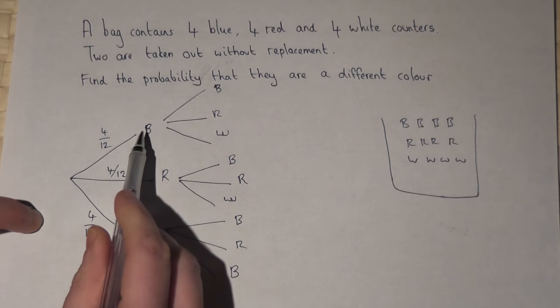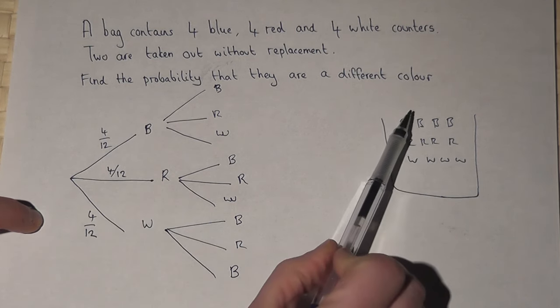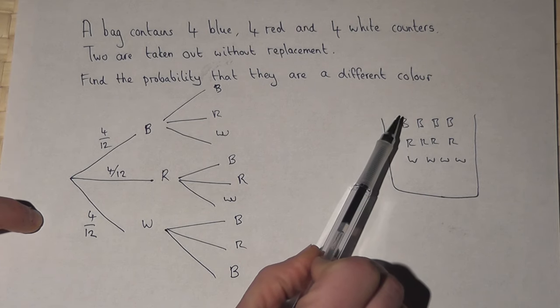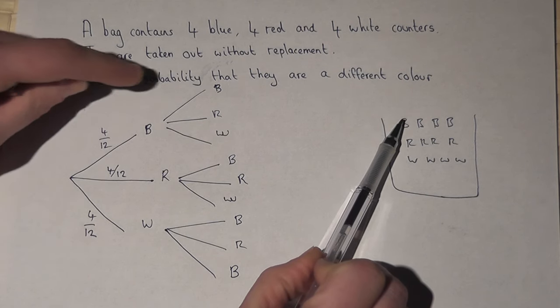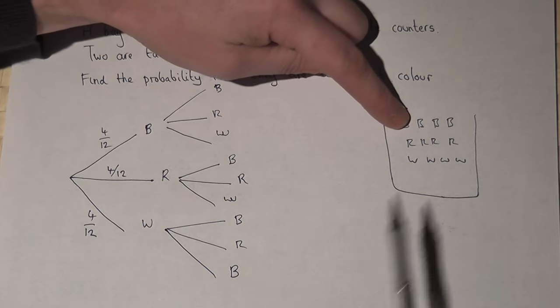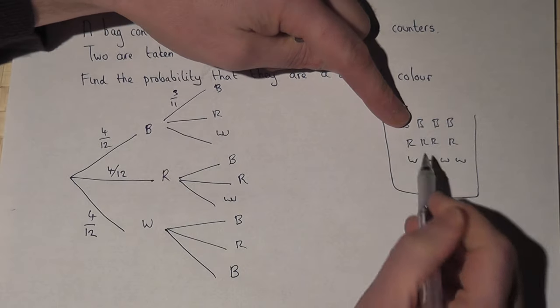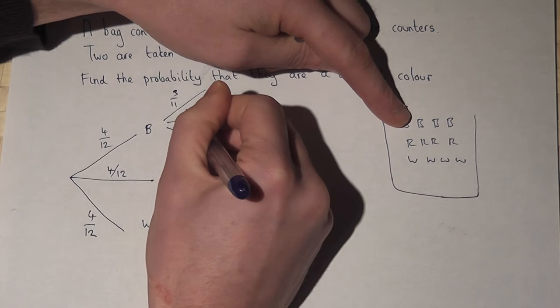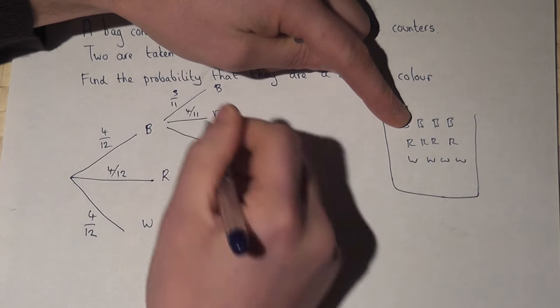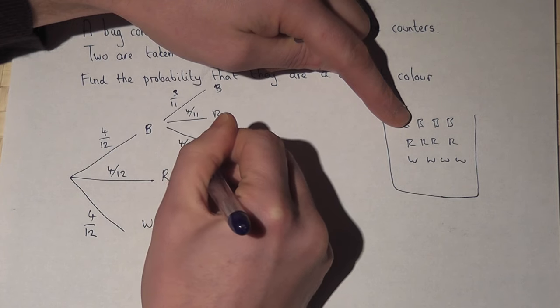Now if you take a blue one out first there's going to be one less blue counter in the bag, so the chance of a blue one now is three out of eleven. A red is four out of eleven and a white is also four out of eleven.